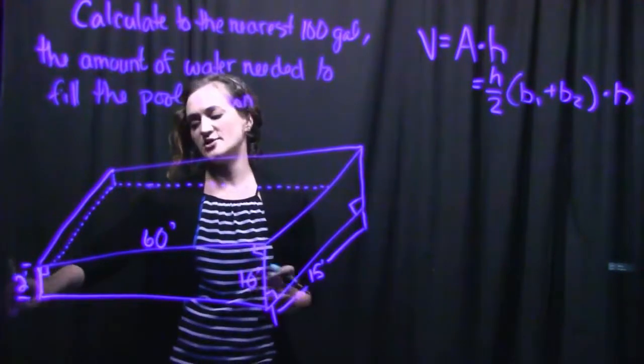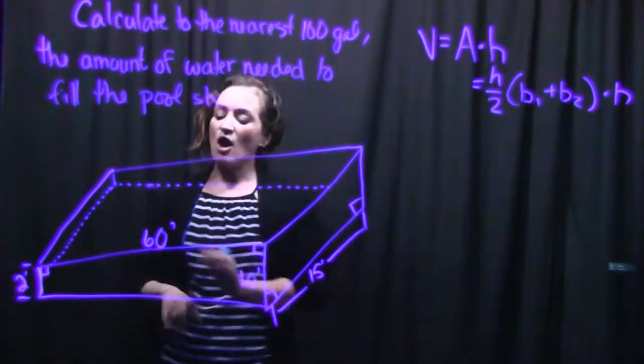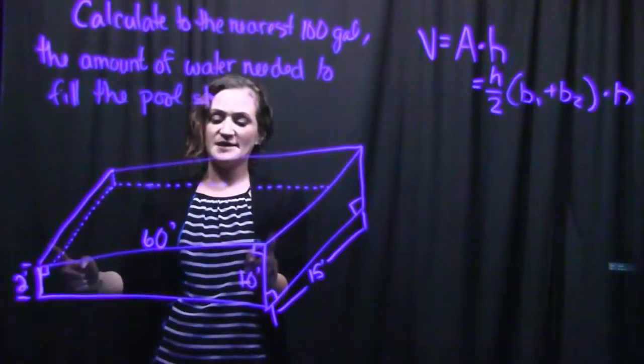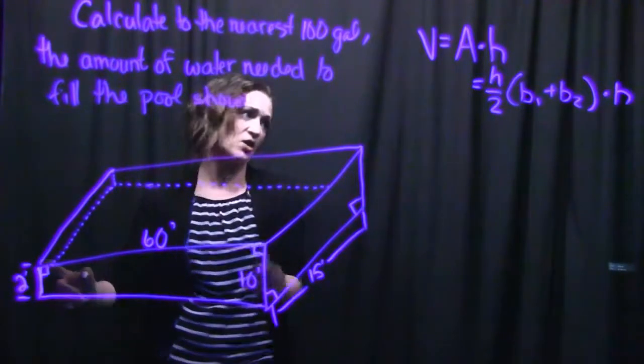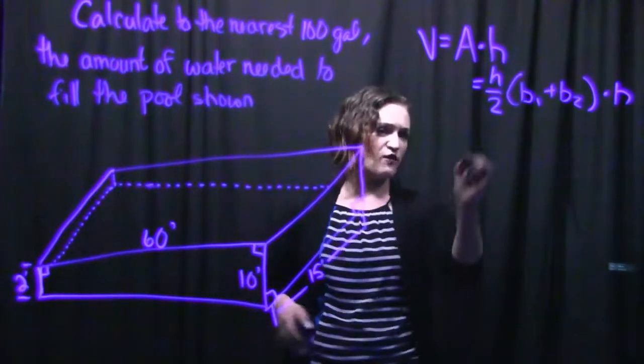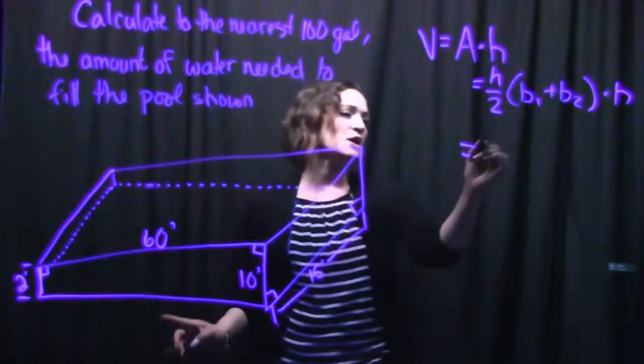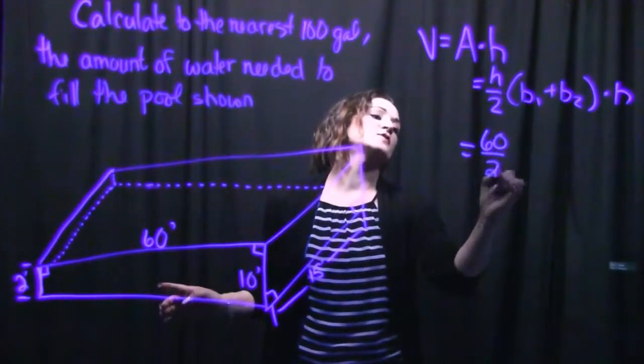So for our trapezoid, our bases are going to be the 2 and the 10. And our length, or our height of this, is this 60 inches here. So how we plug into this formula here, so our height is the 60 inches. So I'm going to plug in that 60 over 2.